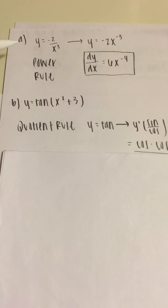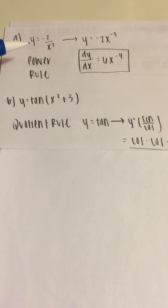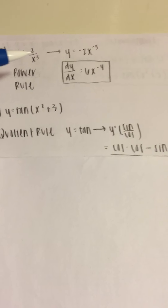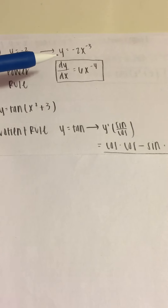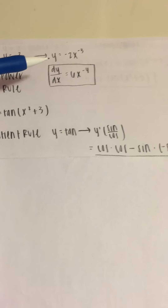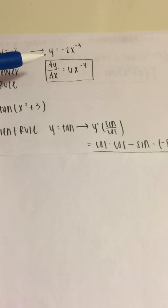First, for A, we get y equals negative 2 over x to the third power. I just rewrote that as y equals negative 2x to the negative third power.